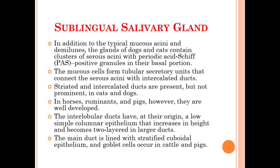The mucus cells present in the sublingual salivary gland form a tubular secretory unit that connects the serous acinus to the intercalated ducts. This tubular secretory unit helps establish a connection between the serous acinus and the intercalated ducts. Striated and intercalated ducts are well developed in most animals except dogs and cats.